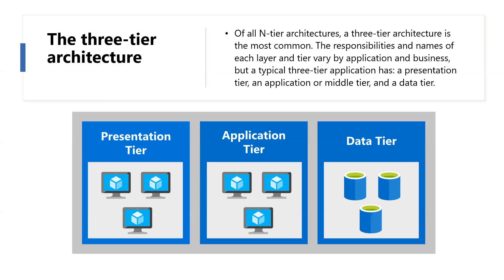In the data tier, the focus is on data storage. Storage of the data in tables, files, or other mediums is the responsibility of this tier. This tier provides an interface to access the data. In a three-tier architecture, the data layer provides data access to the application tier.